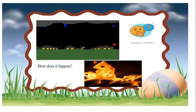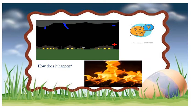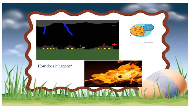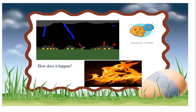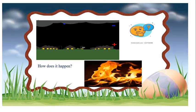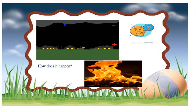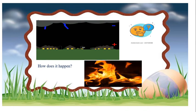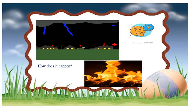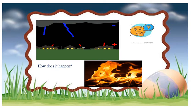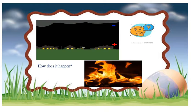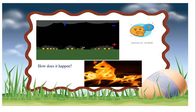Now, students, look at these pictures. Do you have any idea how does it happen? Lightning is a bright flash of electricity produced by a thunderstorm. Lightning is electric current. Tiny bits of frozen raindrops bumping into each other — their collision generates the electricity or electric charge.